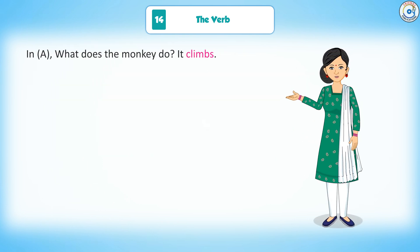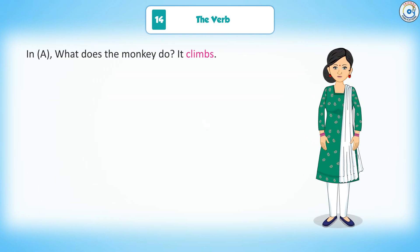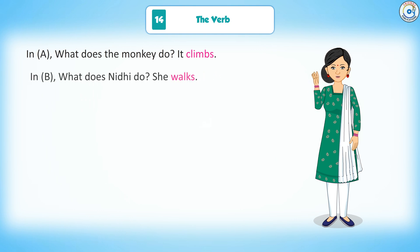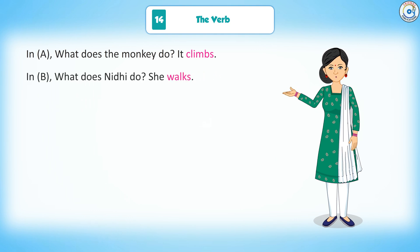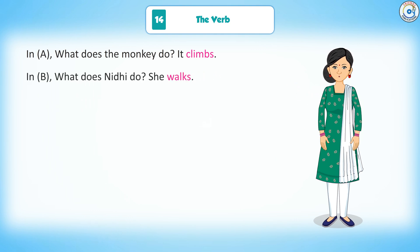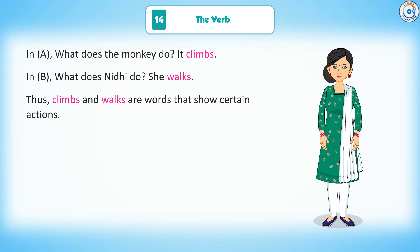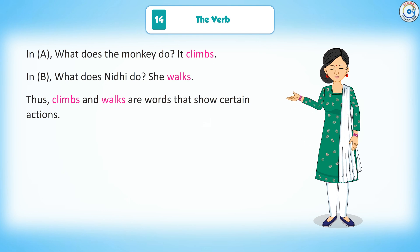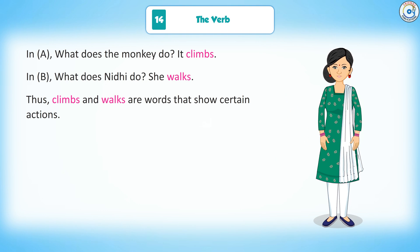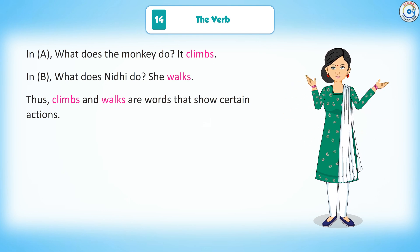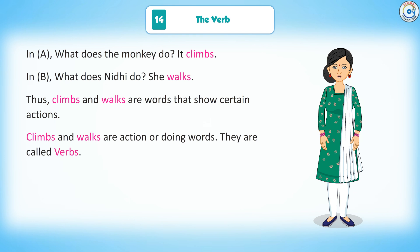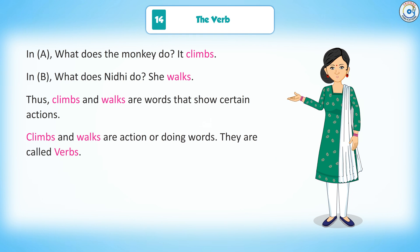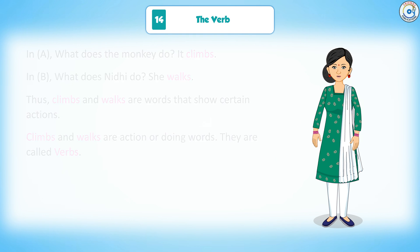In A, what does the monkey do? It climbs. In B, what does Nidhi do? She walks. Thus, climbs and walks are words that show certain actions. Climbs and walks are action or doing words. They are called verbs.